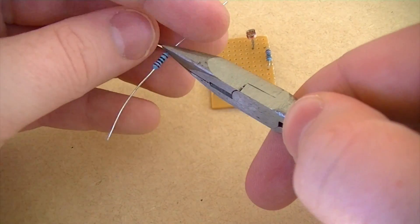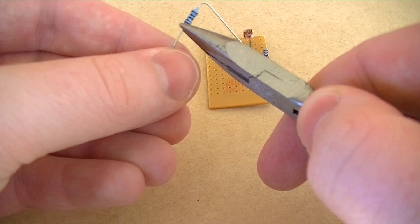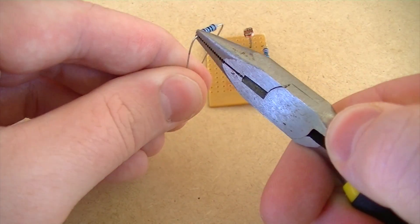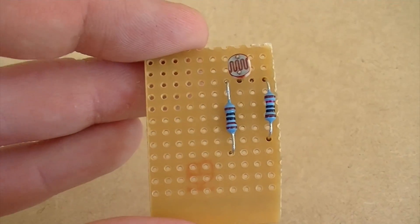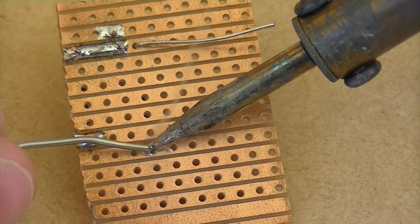Next, using the same method that we used before with the 10k ohm resistor, bend the legs of the 1k ohm resistor like so. Then position it on the board like so and solder it in place.